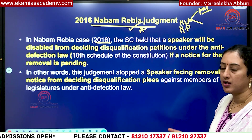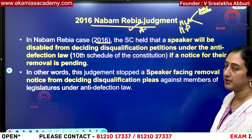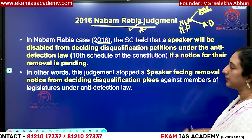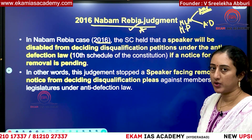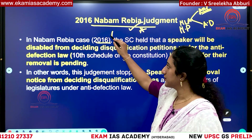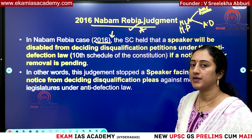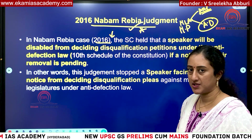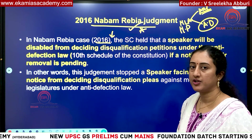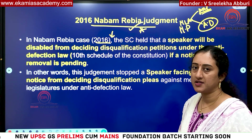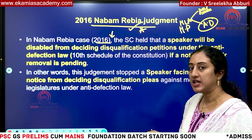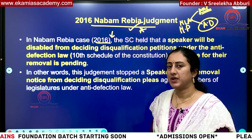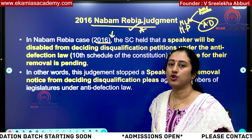Any law passed by parliament can also state on what grounds a member can be disqualified, and under anti-defection, a member of parliament or legislative assembly can be disqualified. In the Nabam Rabia case, the Supreme Court said that if a speaker has the authority to decide anti-defection related cases, his authority is final — he is the only person who can decide defection cases. But the question arises: if a motion is passed to remove the speaker, whether the speaker will have the power to disqualify those persons or not.